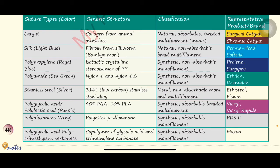Next, coming to silk — it is light blue in colour and is made from fibroin from the silkworm Bombyx mori. It is classified as natural, non-absorbable, braided multifilament. Representative product: Perma-Hand soft silk. Next, polypropylene — it is royal blue in colour, made up of isotactic crystalline, a stereo isomer of polypropylene. It is synthetic, non-absorbable, and monofilament. Polyamide (nylon) is sea green in colour, made up of nylon 6 and nylon 6,6. It is synthetic, non-absorbable, monofilament. Examples are Ethilon and Dermalon.